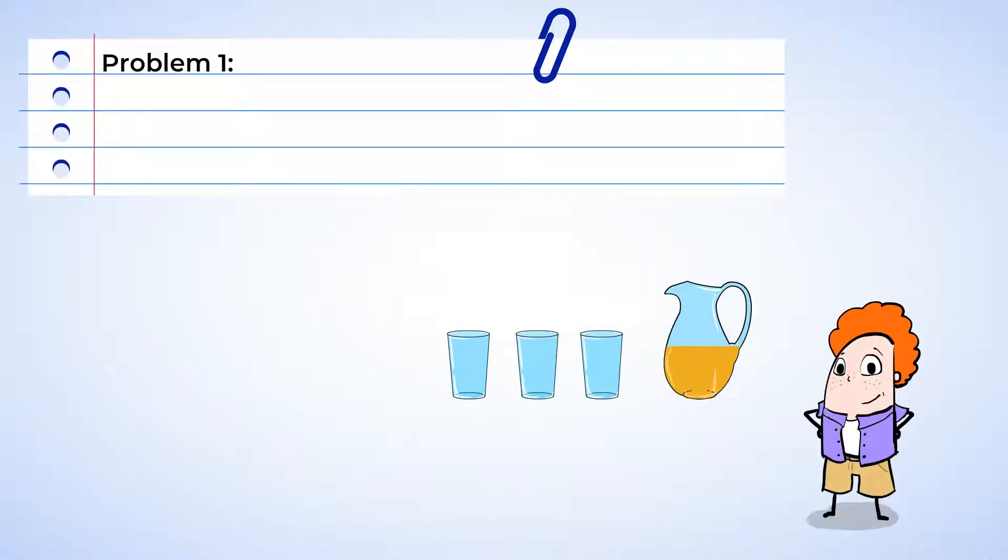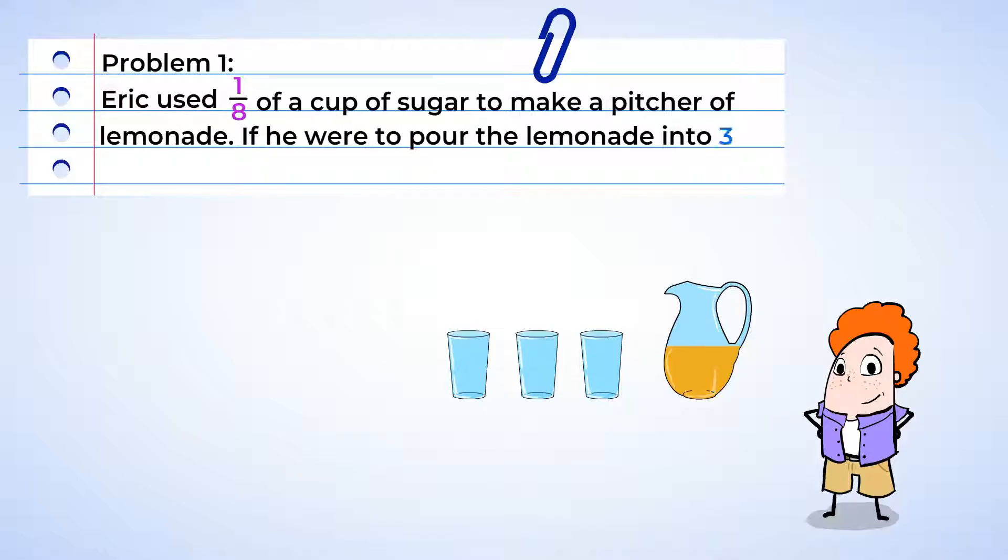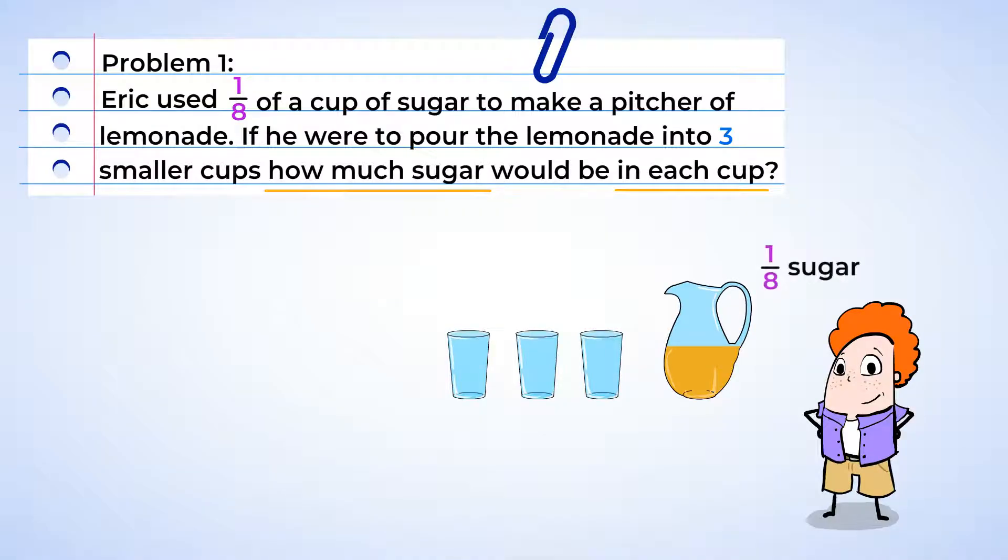Ooh, Eric's making lemonade. Eric used one-eighth of a cup of sugar to make a pitcher of lemonade. If he were to pour the lemonade into three smaller cups for his friends, how much sugar would be in each cup? All right, so the total amount of sugar, one-eighth of a cup, is being equally divided into three cups. Let's start by writing down our expression of one-eighth divided by three.